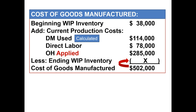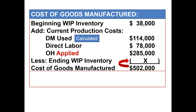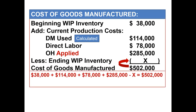We'll work backward: $38,000 plus $114,000 plus $78,000 plus $285,000 minus the ending work in process inventory equals $502,000. Solving for our unknown, we find that ending work in process inventory is $13,000.